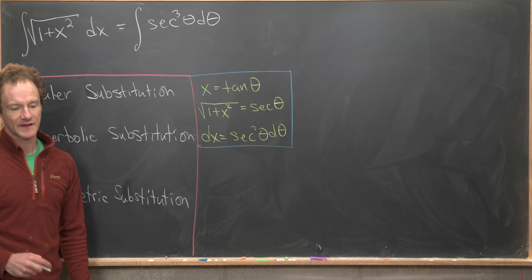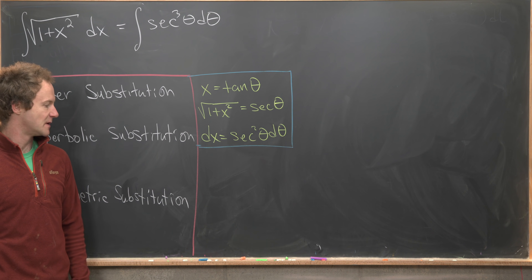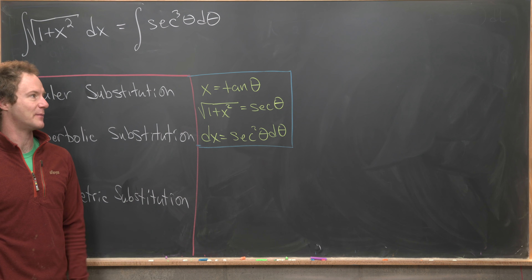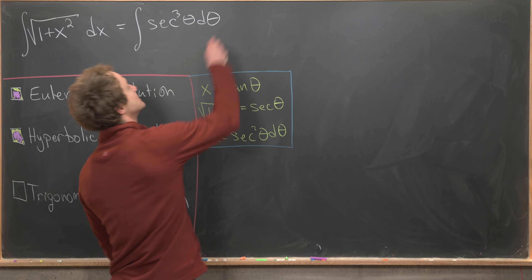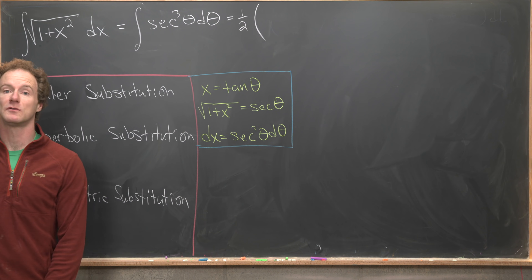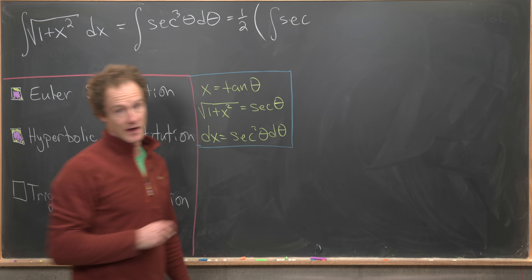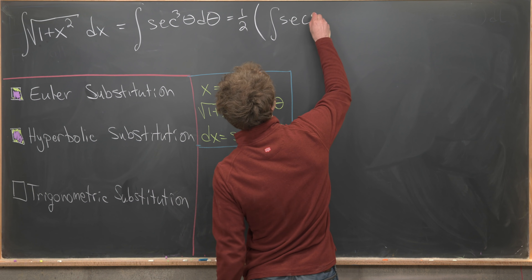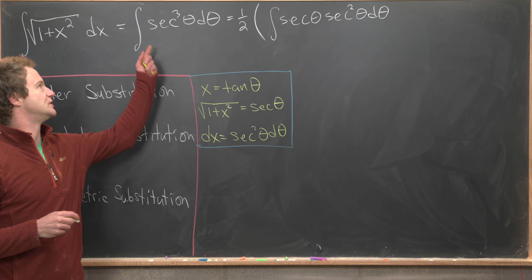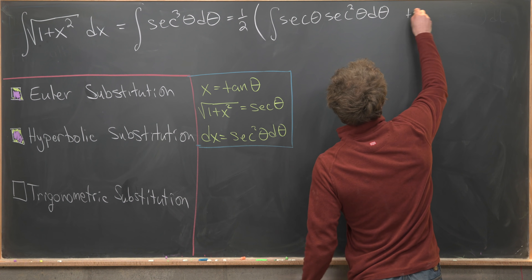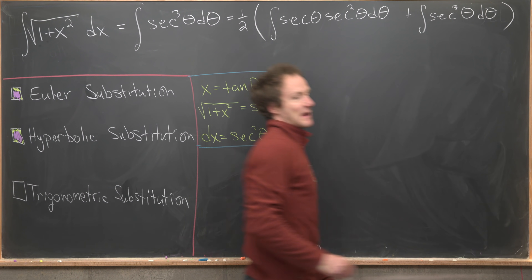The best approach is integration by parts. Rather than the standard presentation, I'll use a method of splitting the integral into two copies of itself that cancel. I write one-half times: the integral of sec(θ) · sec²(θ) dθ, plus the integral of sec³(θ) dθ. The first integral will be handled with integration by parts, exploiting the simple antiderivative of sec².